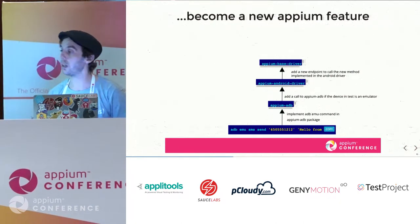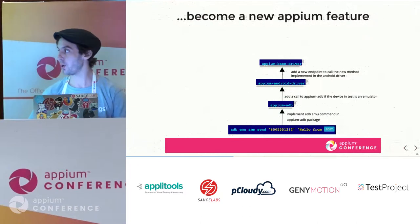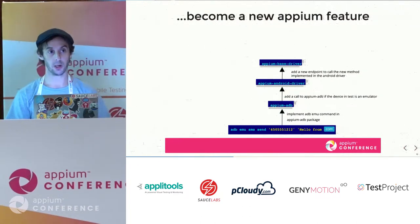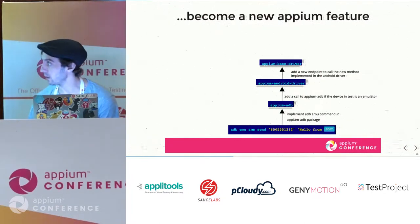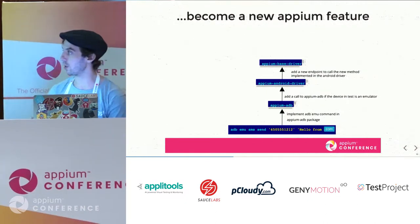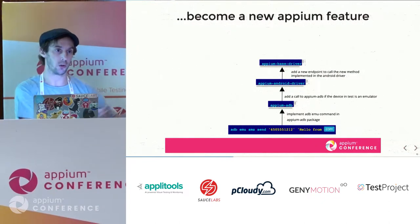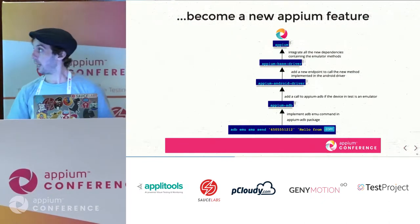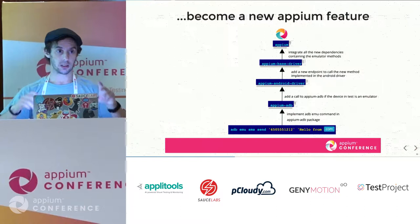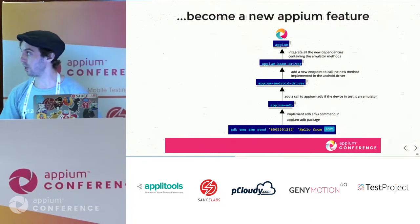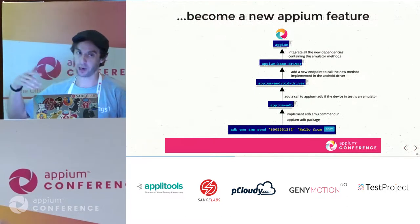On the other side is the Appium base driver. Appium is a server, and for each thing you want to do, you need an endpoint and parameters. So you add a new endpoint in the base driver that all clients can communicate with. Once all these packages are updated, a new Appium release is created and the feature becomes available to everyone.